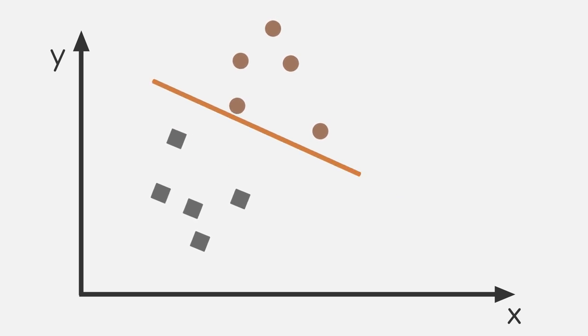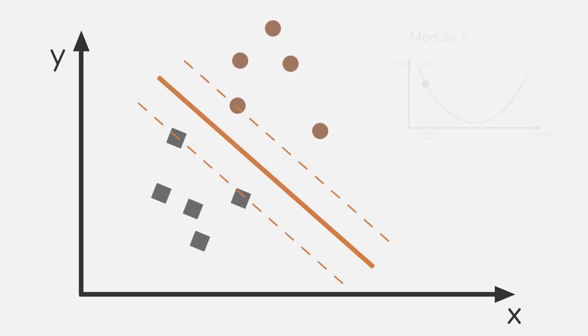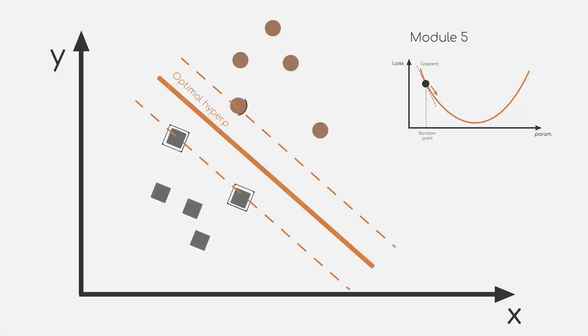One possibility to minimize this cost function is to use gradient descent. For more details on gradient descent, you can head over to module 5, where we talk about regression and minimizing a function using gradient descent.